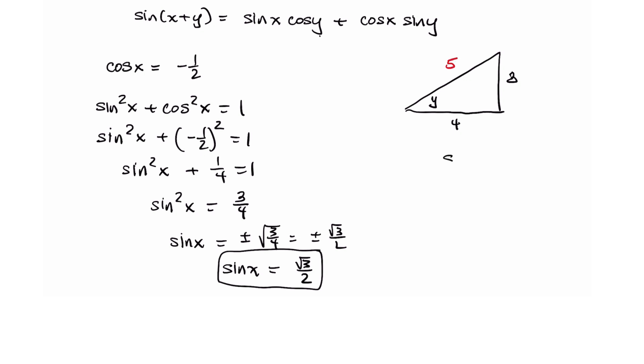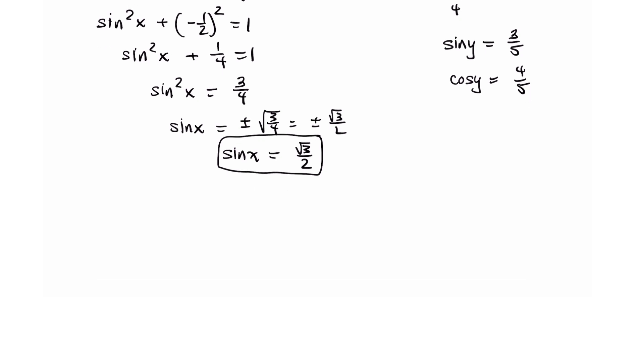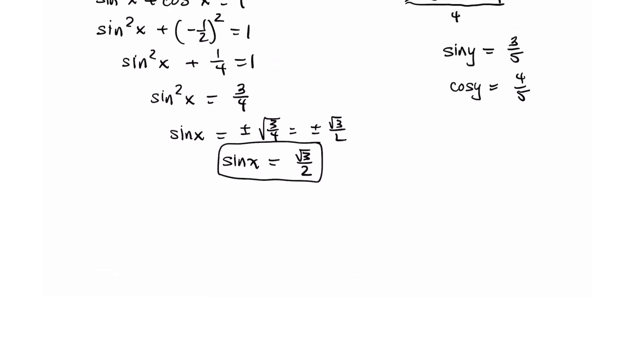So this means that sine of y is equal to three-fifths, and cosine of y is equal to four-fifths. So now we have all of the values that we need in order to evaluate the sine of x plus y. And I didn't leave enough room, so I'm going to have to copy that down again here.